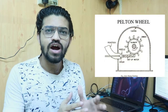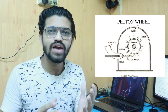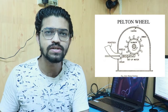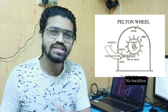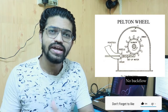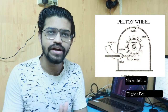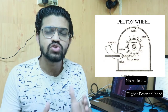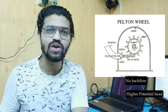In case of the impulse turbine, the draft tube is not needed. For a Pelton wheel turbine, there is a jet of water and the water gets drained into the tail race — there is no situation of backflow. Also, in the case of the impulse turbine, the available potential head of the water is much higher. These are the two reasons why the draft tube is not required for the impulse turbine.